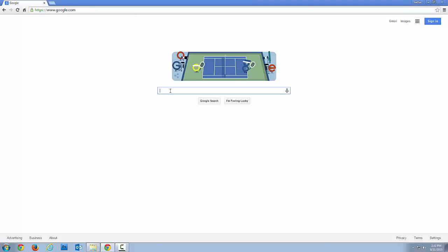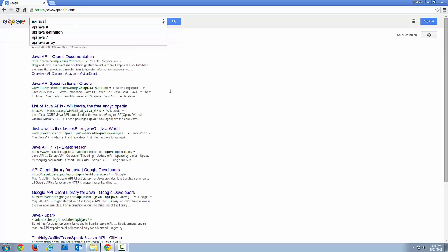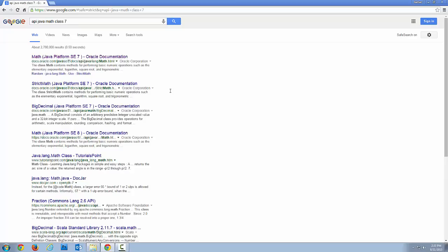So what I'm going to do is type in API, and then the language that I'm looking for, which is Java. And then I'm going to say what specifically am I looking for, and I'm looking for the math class. And then I'm going to put a 7 in there just for a version number. You can look at older or newer versions if you know what version you're looking for. You can just put a 7 there, 8 there, or whatever the newest version is.